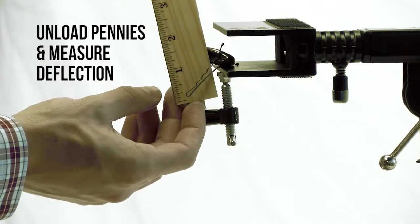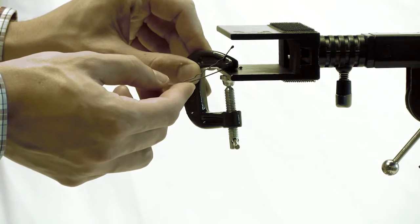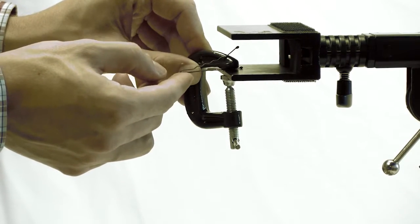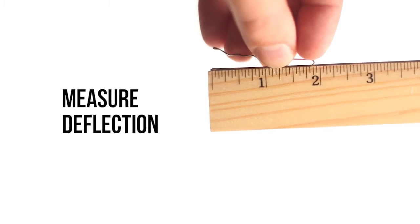Unload the control bobby pin. Measure and record any permanent deflection. Bend the control bobby pin back to its original position to remove the permanent deflection. The control bobby pin should return to its original position.